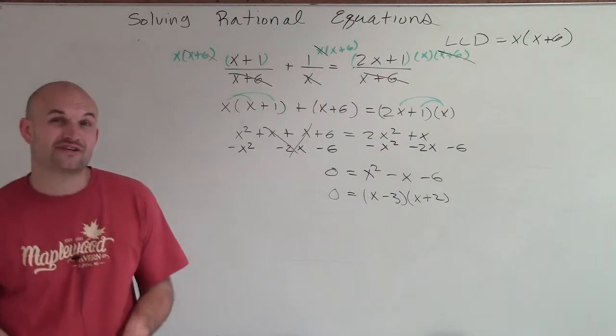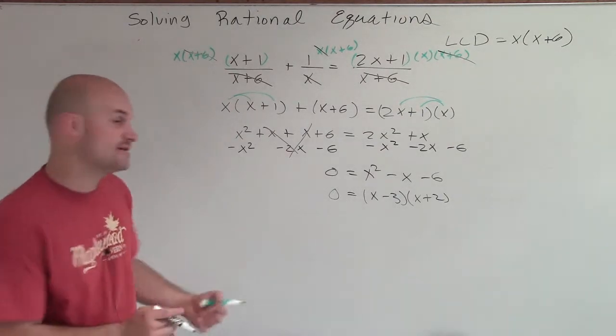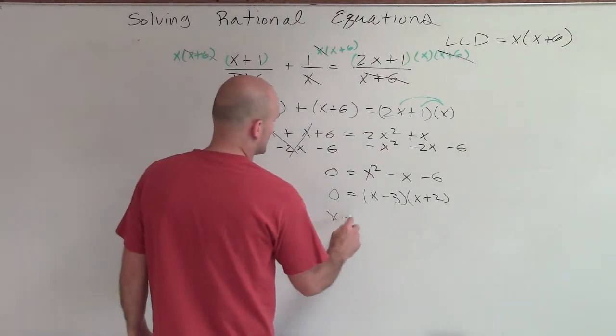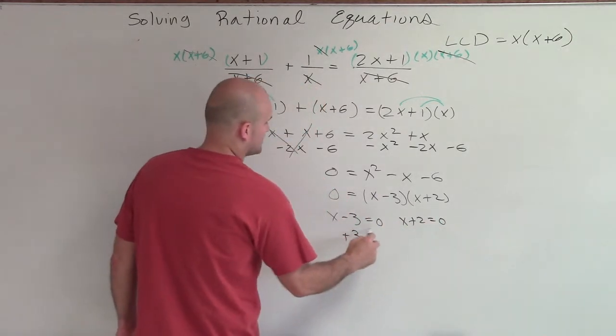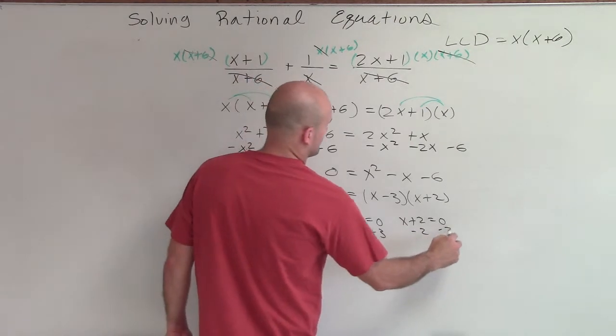Now that we have, since we factored it, we have a product that's equal to 0. So now, I can apply the 0 product property. And then when I do that, I solve. Therefore, I can say x equals 3 or x equals negative 2.